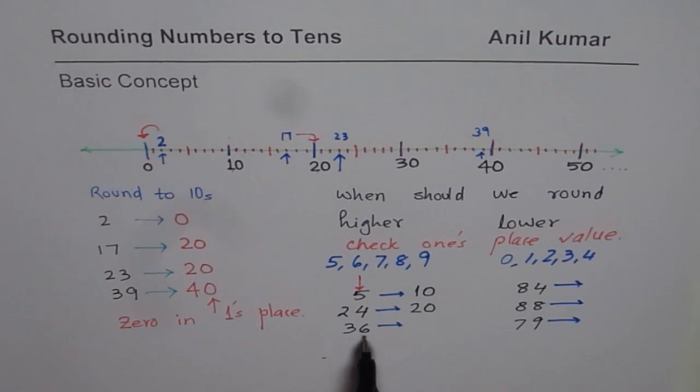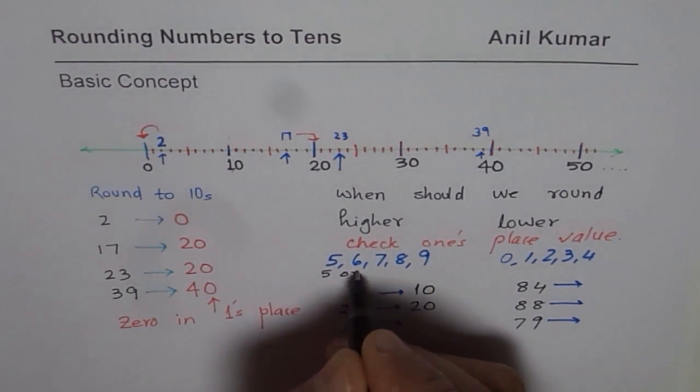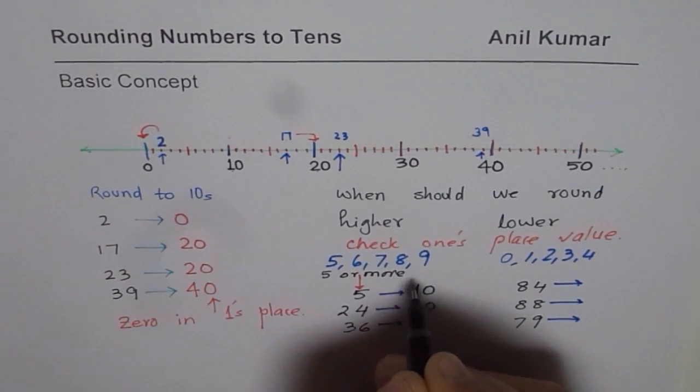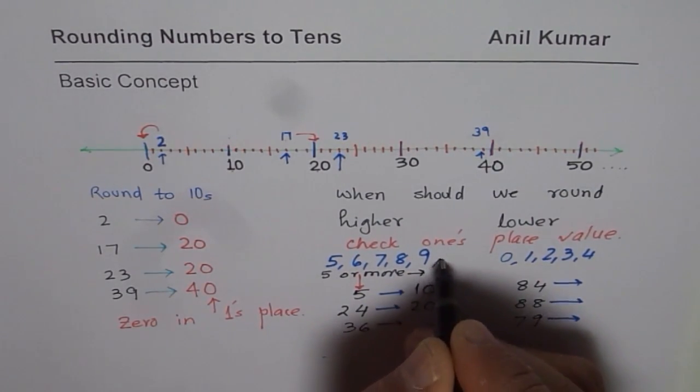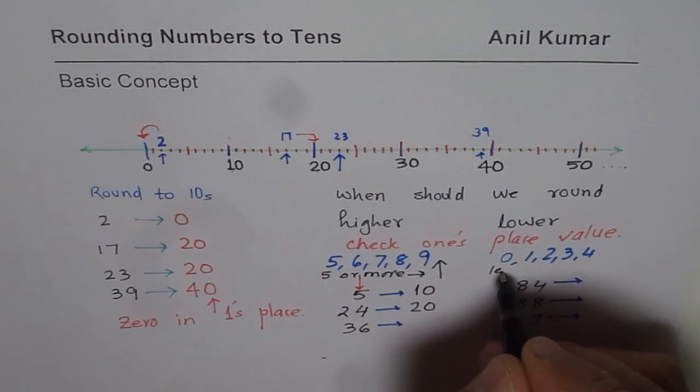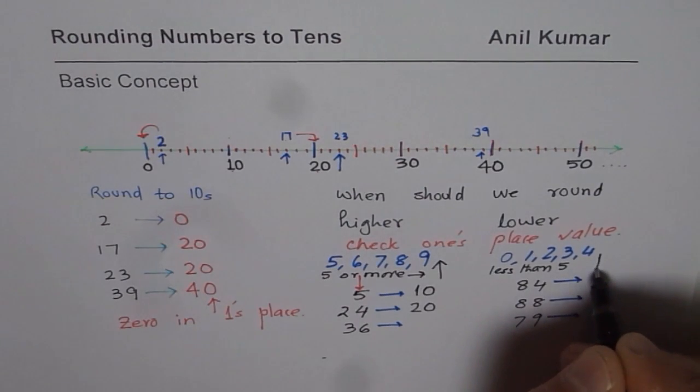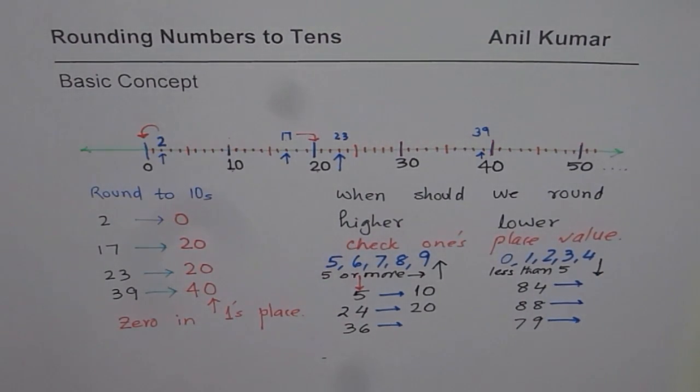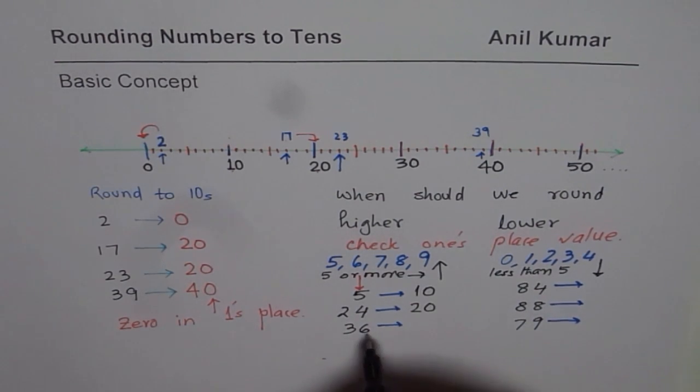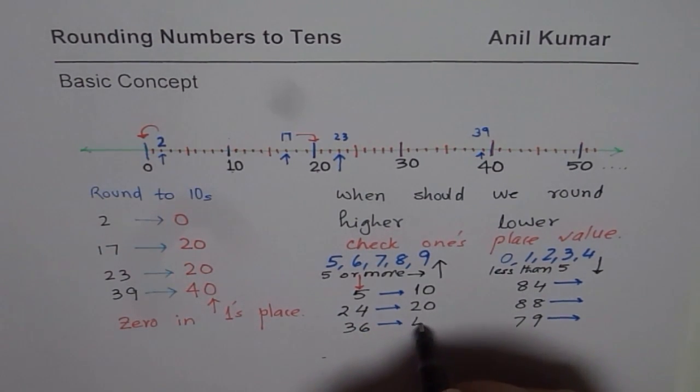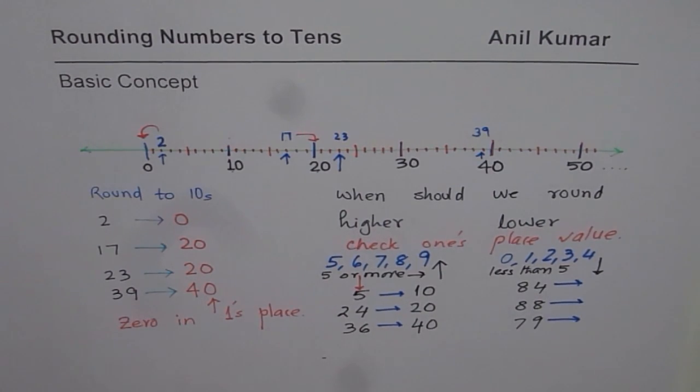36. 6 is in this group, 5 or more. This group, we can say 5 or more. Means higher. Less than 5 means lower. That is what is easy for us to remember. 6 is 5 or more. So 36 becomes 40.